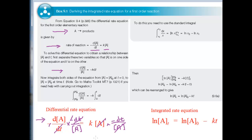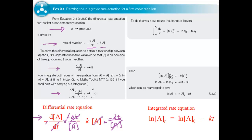Now you integrate both sides of the equation from the start of the reaction at t equals 0 to a time t. This is called integrating between limits and is written like this. You can take K out of the integration on the right-hand side because it's a constant. To work out the integration on the left-hand side of the equation, you need to use a standard integral: the integral of 1 over x dx is log x — that's log to the base e.